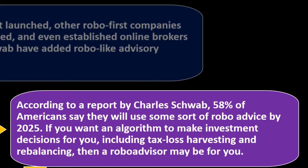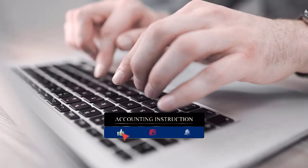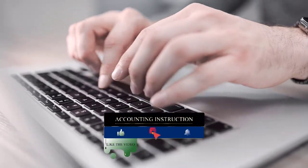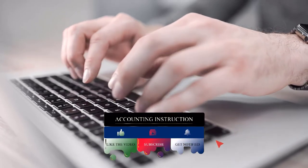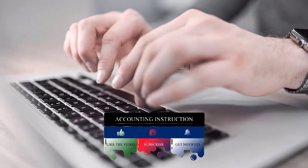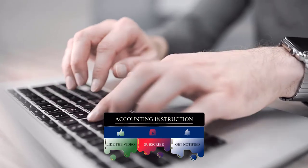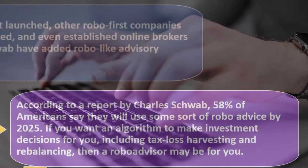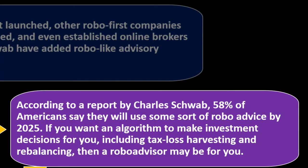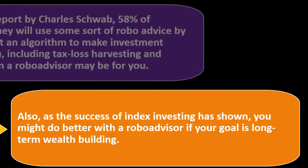If you want an algorithm to make investment decisions for you, including tax-loss harvesting and rebalancing, then a robo advisor may be for you. If you can compile your data from multiple financial institutions using tools to aggregate them, robo advice can use general heuristic tools to suggest what the average investment should be given your age range, risk tolerance, and possible tax strategies.